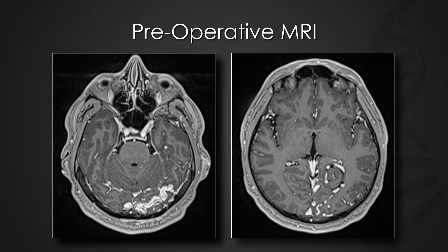MRI of the brain with contrast demonstrated dilated vessels within the left parietal occipital lobe with communication with the left transverse sinus. There was no evidence of associated FLAIR signal change, nor was there any evidence of prior hemorrhage.